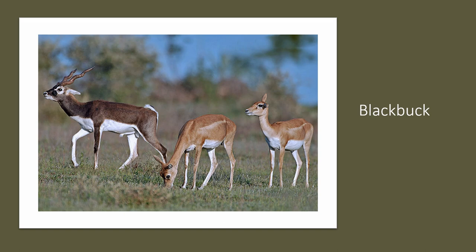The blackbuck is another introduced species from India, introduced to Texas and the Channel Islands of California. It's within the cattle family and is considered to be an antelope. The male has distinctive spiraled horns, and the female looks similar to a pronghorn. However, the pronghorn has white markings on its face, sides, and rump, whereas the blackbuck female does not.